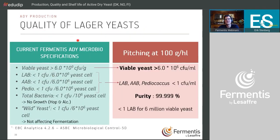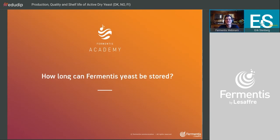For lager yeast the purity is exactly the same — 99.999% — but viable yeast cell count is slightly lower at a minimum of 6 billion cells per gram. There can be some variation; this is the minimum specification. It's a little lower because lager yeasts are slightly harder to produce.